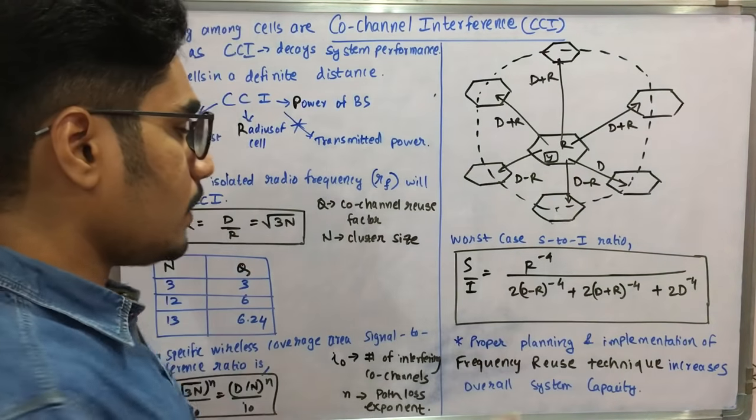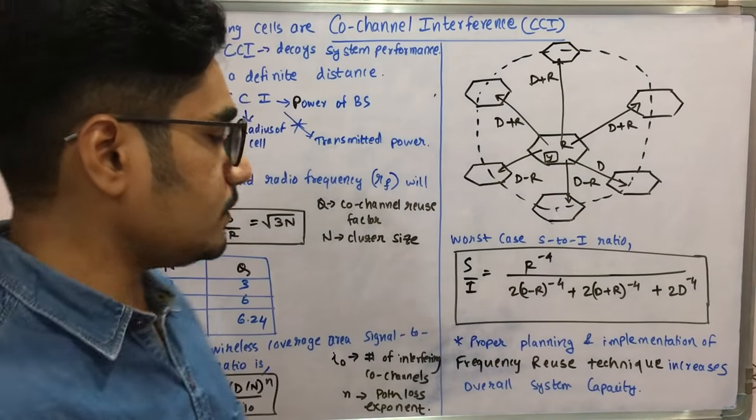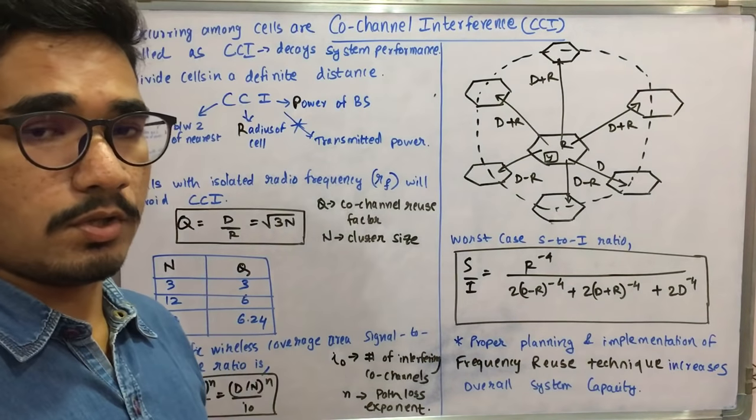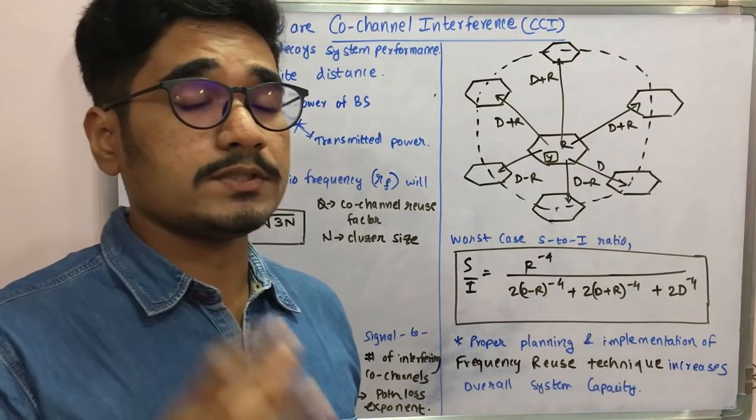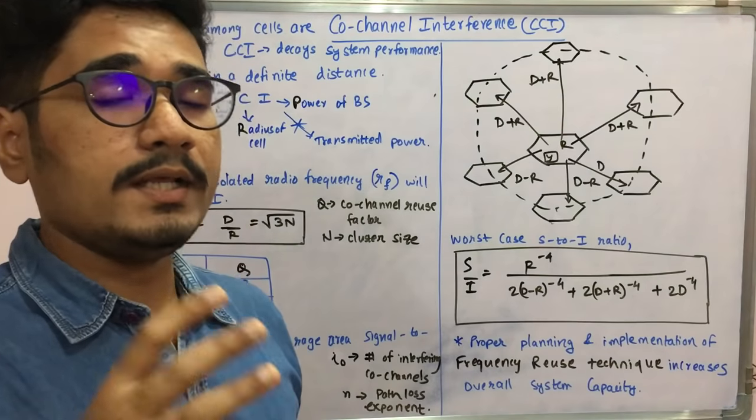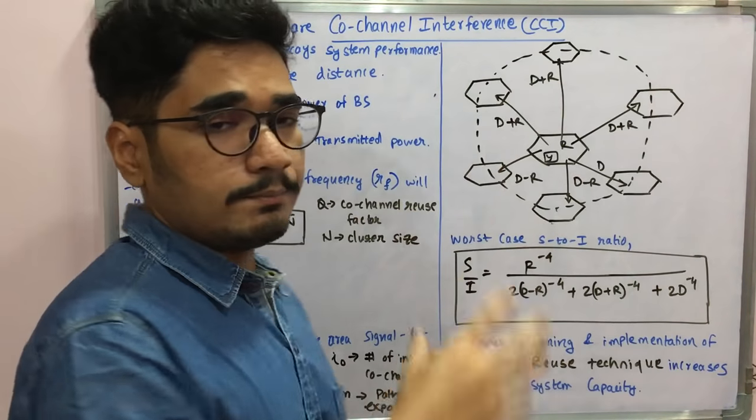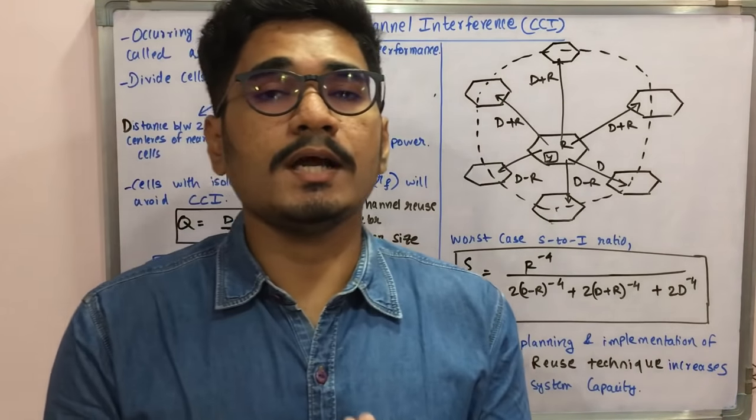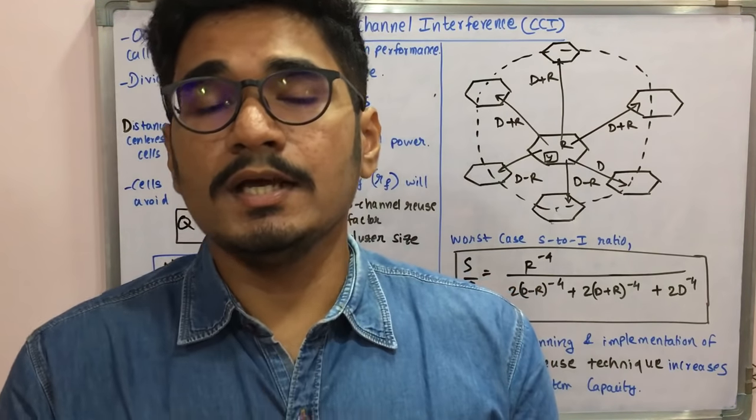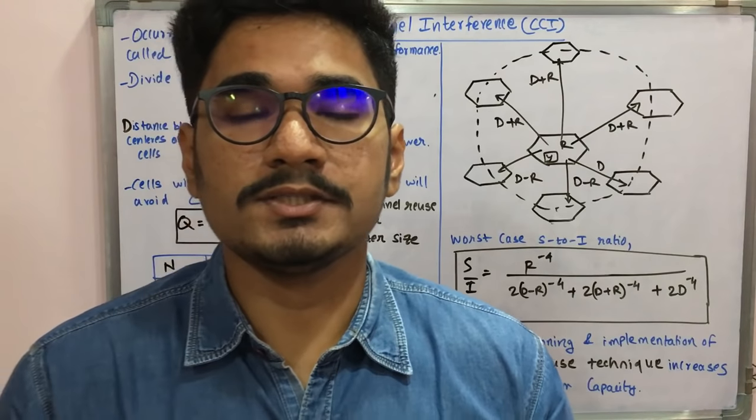How you can avoid this, or a way to solution, is by proper planning and implementation of the frequency reuse technique which we saw in that honeycomb structure. That will avoid this co-channel interference and it will improve the overall system capacity. That was all regarding the co-channel interference CCI in wireless communication.